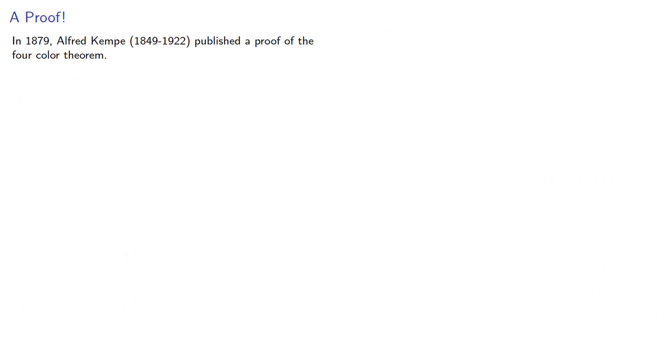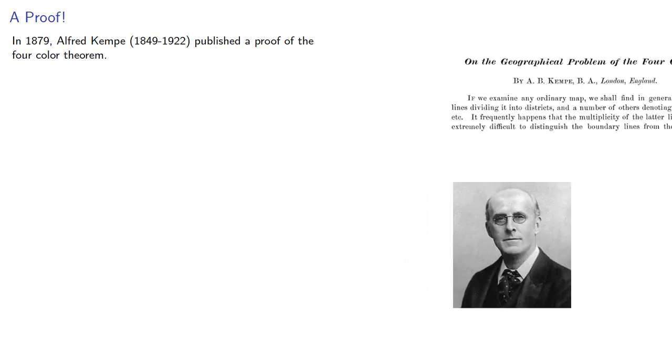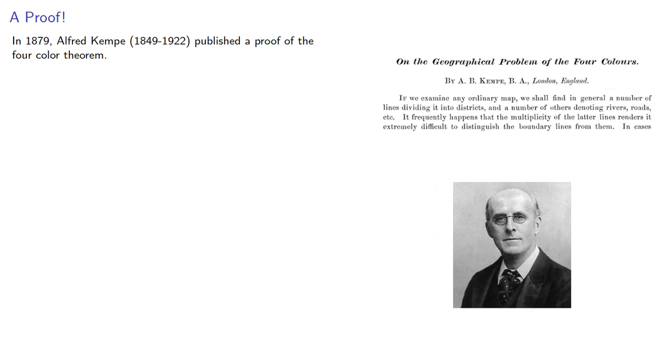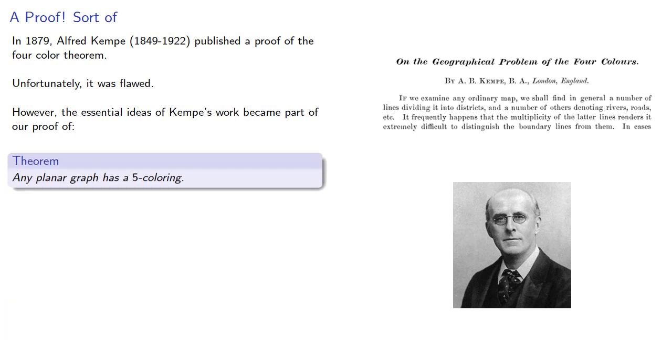In 1879, Alfred Kemp published a proof of the four-color theorem. Unfortunately, it was flawed. However, the essential ideas of Kemp's work became part of our proof of the theorem that any planar graph has a five-coloring.